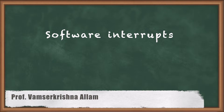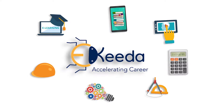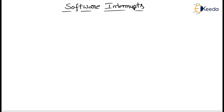Hi my dear students, today we will discuss about Software Interrupts. In the last class we discussed about Hardware Interrupts — that are non-maskable interrupts and INTR interrupts. Those two are the Hardware Interrupts present in the 8086 microprocessor, available at pin number 17 and pin number 18. Now we will discuss about Software Interrupts.